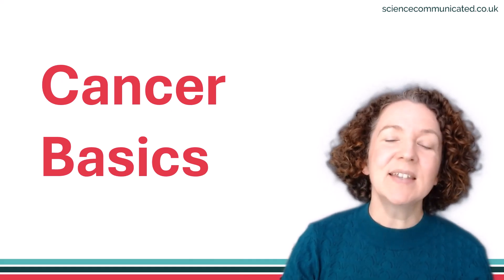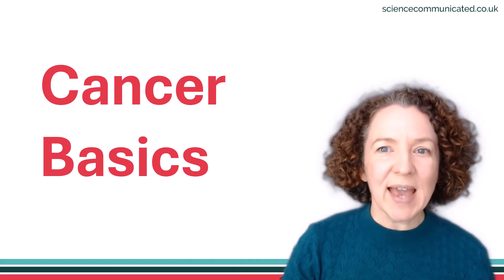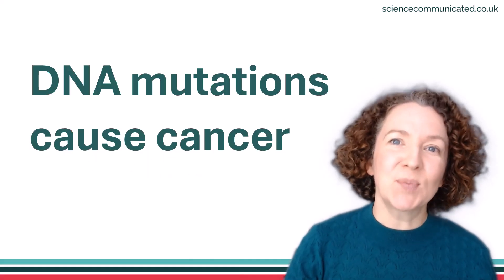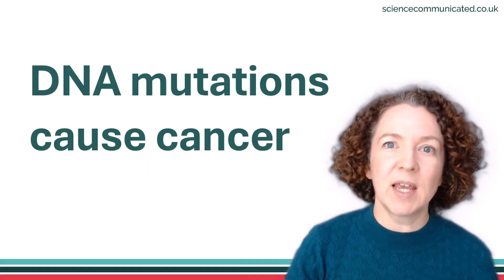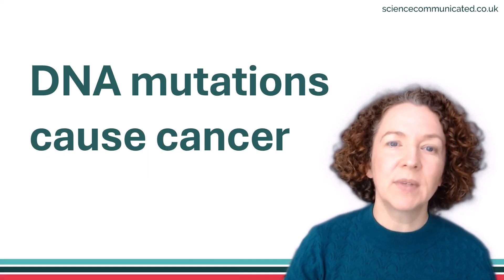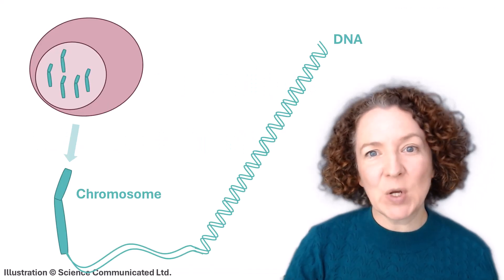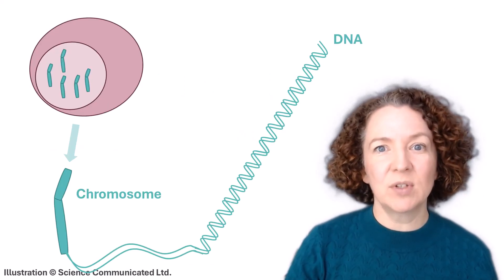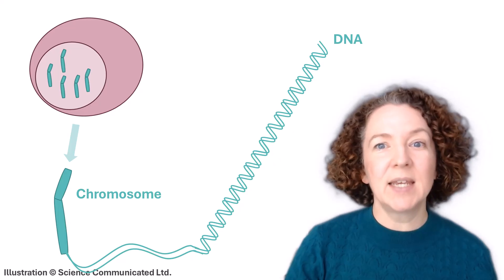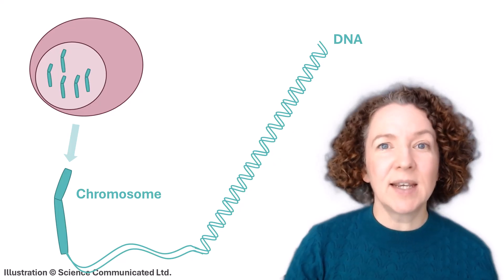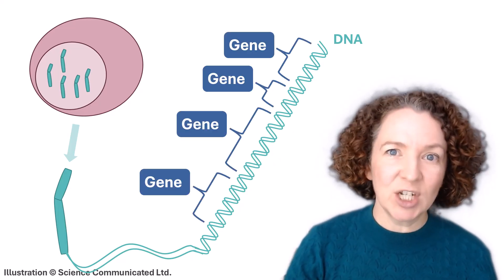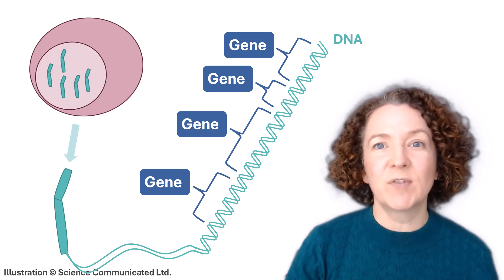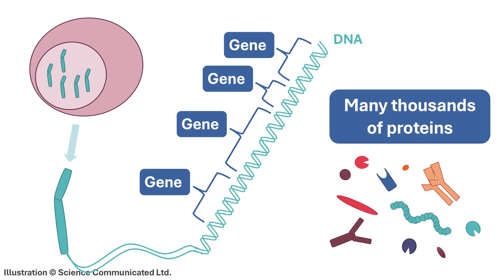My name is Elaine Vickers and this is my Cancer Basics video series. In this video I'm going to explain why DNA mutations cause cancer. As I explained in the first video of this series, our cells contain chromosomes, which are made of DNA, and in this DNA are around 20,000 genes which the cell uses as instructions for making many thousands of different proteins.